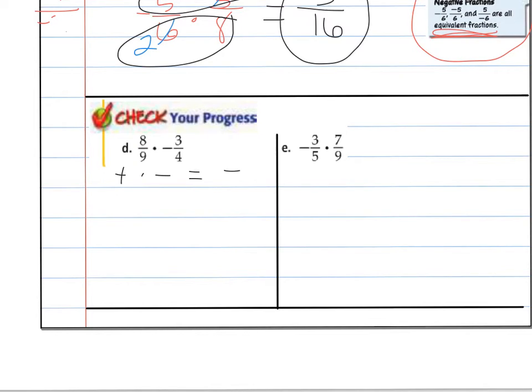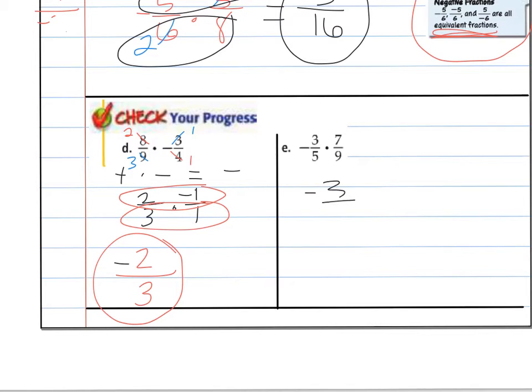Positive times a negative is a negative. So I'm going to have my negative answer. And I know that 4 goes into 4 once. 4 goes into 8 two times. 3 goes into 3 once. 3 goes into 9 three times. So I really have 2 thirds times negative 1 over 1. So I get a negative 2 over 3. Over here, negative 3 fifths times 7 ninths. So I have a negative times a positive for a negative answer. I could cross cancel now or simplify later. 3 goes into 3 once. 3 goes into 9 three times. 5 and 7 don't share factors other than 1. So negative 1 times 7 is negative 7. 5 times 3 is 15. So negative 7 fifteenths.